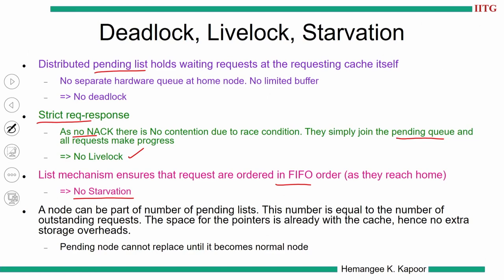A node can be part of a variety of pending lists. One quad node can be part of multiple pending lists, the number decided by how many outstanding requests can go out from one quad. The space for pointers is already in the cache, so even with more outstanding requests it does not matter because space is allocated in the RSE for data and forward/backward pointers. Any pending node cannot leave its cell in the RSE until completing its operation and becoming a normal node, hence no extra storage overhead.